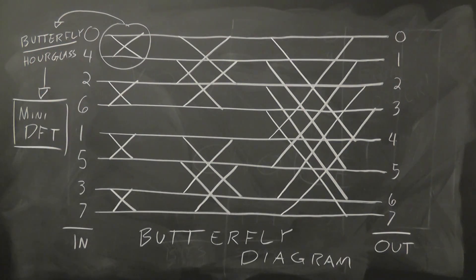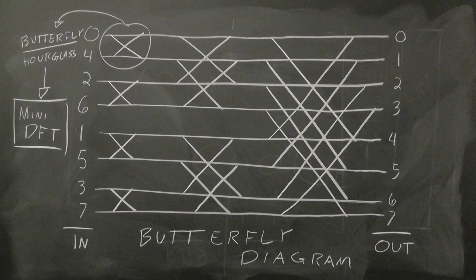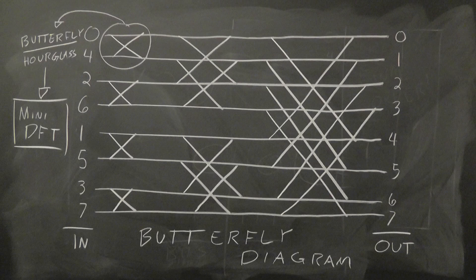In addition, each butterfly is a small discrete Fourier transform that avoids unnecessary matrix multiplications and summations. Instead of eight sums, here we only need seven weaker butterflies.